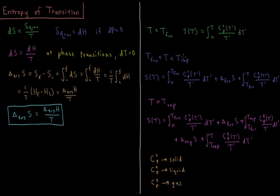If you're between the melting point and the boiling point — between the temperature of fusion and the temperature of vaporization — the entropy at that temperature is the integral from 0 to the melting point of the solid heat capacity over temperature, plus the entropy of fusion, which is delta H_fus over T_fus, plus the integral from the melting point up to that temperature of the constant pressure liquid heat capacity, Cp,l, divided by temperature.